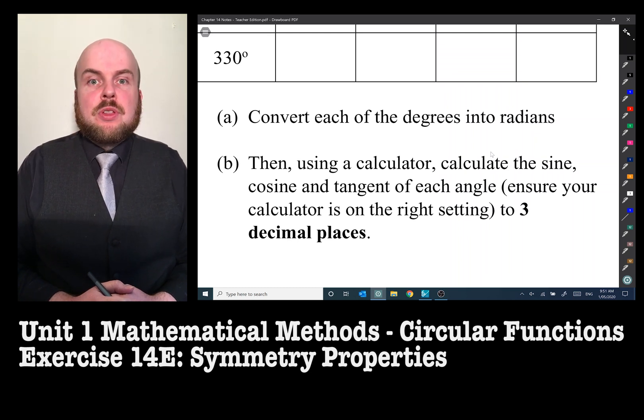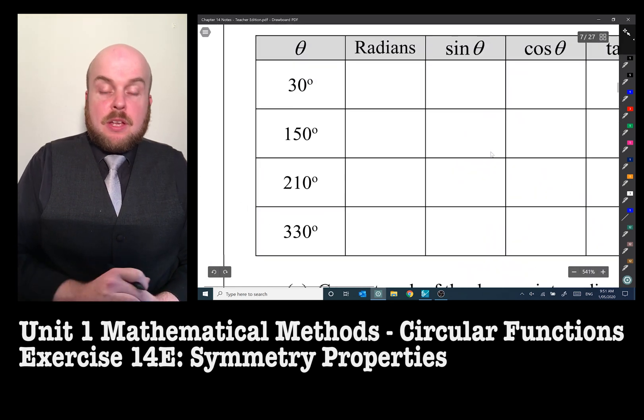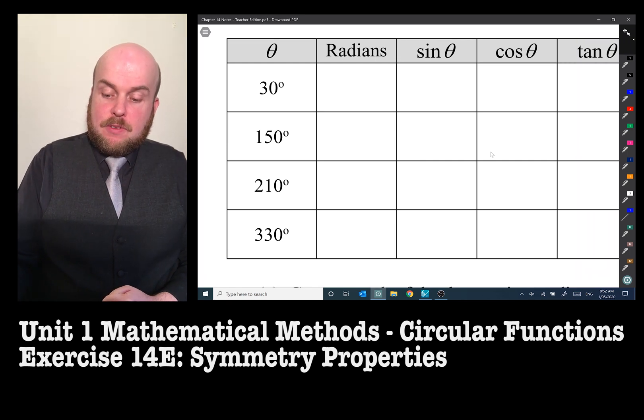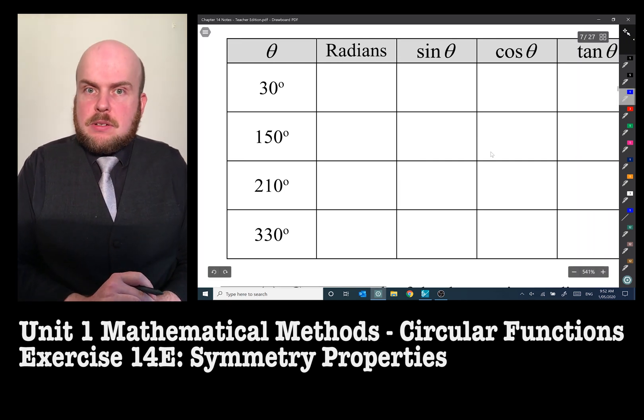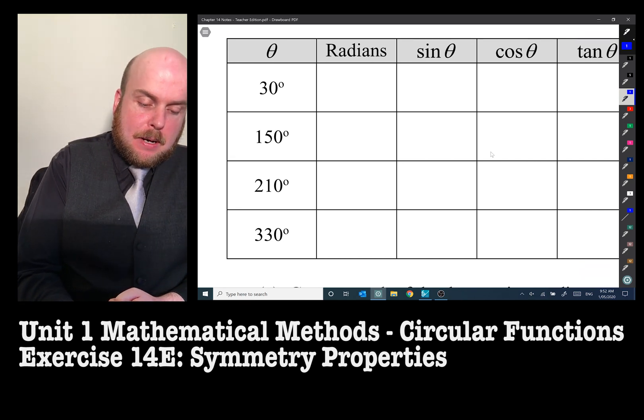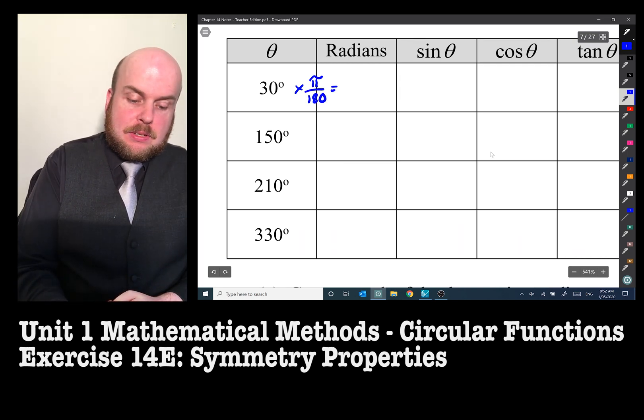Let's do exactly that. So 30 degrees, if you remember what the conversion is, what we need to do to get that into radians is to times it by π over 180, and when we have done that, that gets us to π on 6.